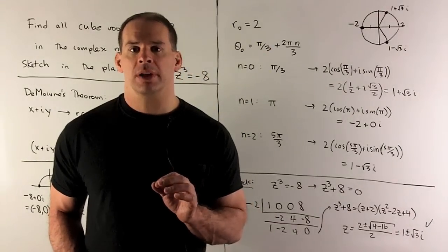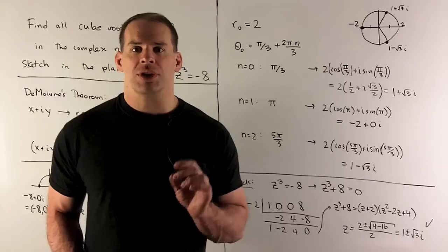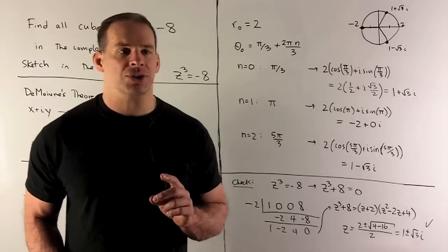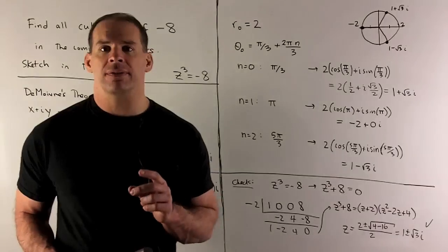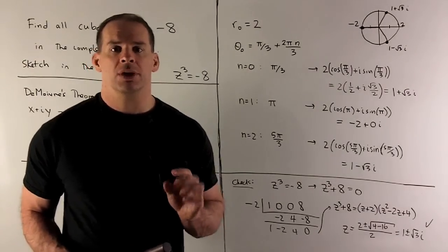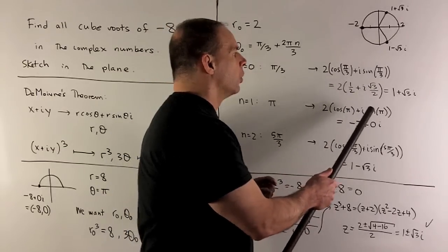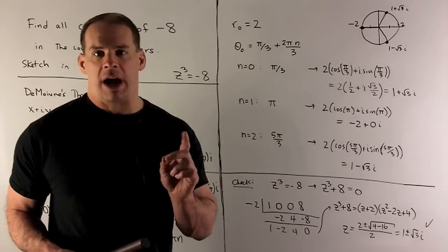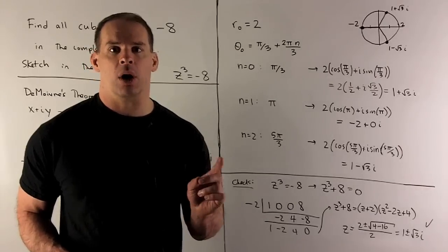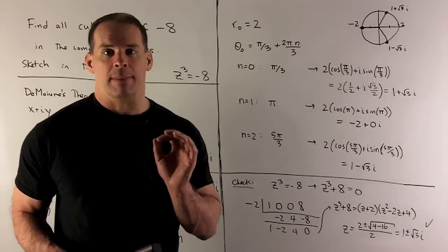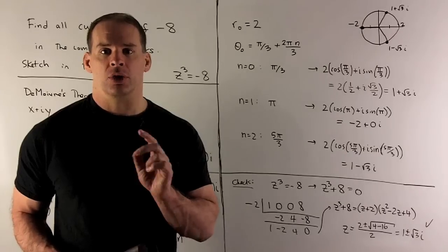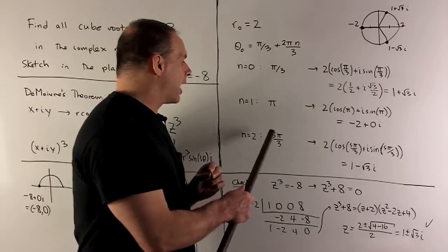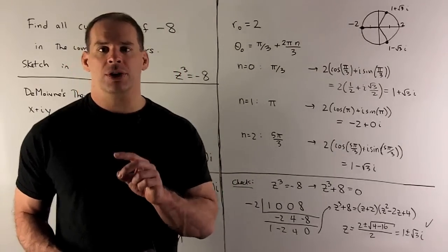Putting numbers to the equation: r equals 2, theta equals pi thirds plus n times 2 pi over 3. For n equals 0, theta is pi thirds. Cosine of pi thirds is 1/2, sine of pi thirds is root 3 over 2, so we get 2 times (1/2 plus root 3 over 2 i), which is 1 plus root 3 i. For n equals 1, theta is pi thirds plus 2 pi thirds, which is pi. Cosine of pi is minus 1, sine of pi is 0, giving minus 2 — which checks, since the real cube root of minus 8 is minus 2.